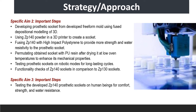The next step involves creating a prosthetic socket using 3D printing based on the developed free-form mold, using fused depositional modeling. ZP-140 powder will be used in a 3D printer to create the socket and will be fused with high-impact polystyrene to provide more strength and water resistivity. The obtained socket will be further permeated with PU resin after drying at low oven temperatures to enhance its mechanical properties. This socket will be tested on robotic models for long-lasting cycles and undergo functionality checks, and finally tested on human beings for comfort, strength, and water resistance.